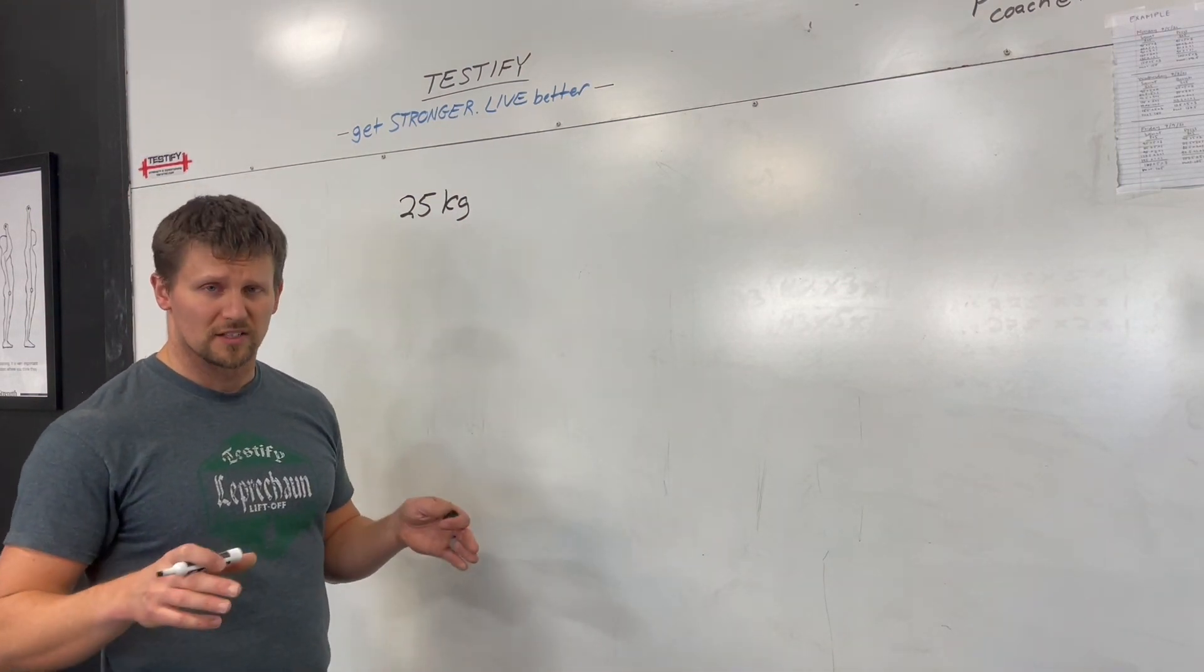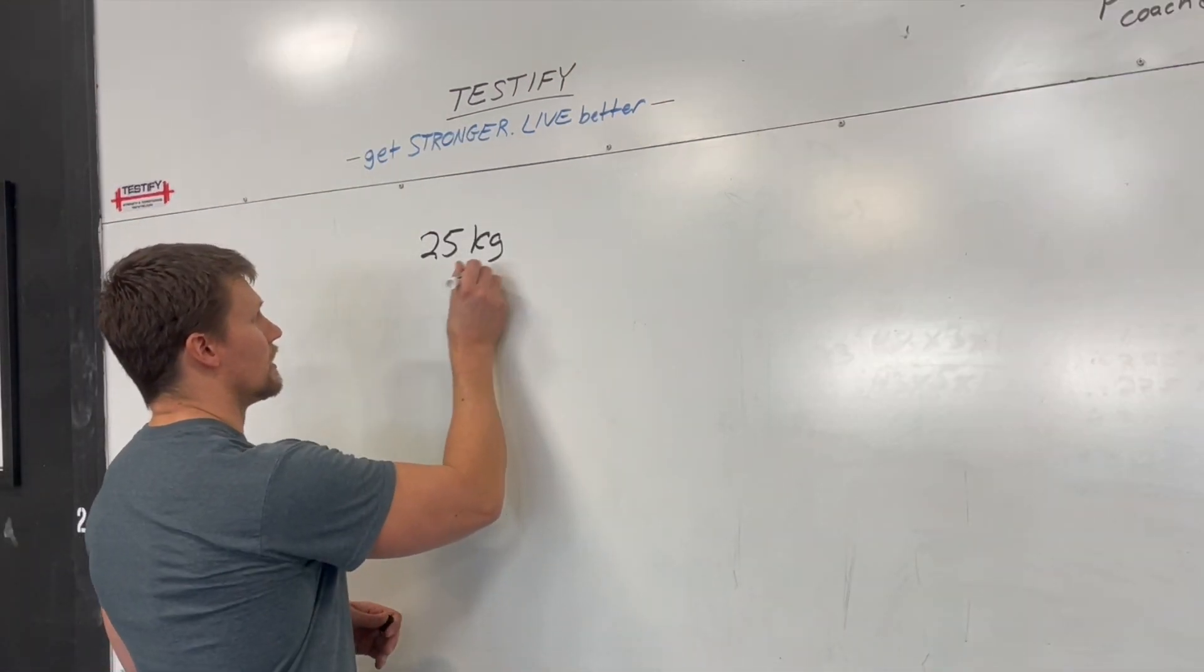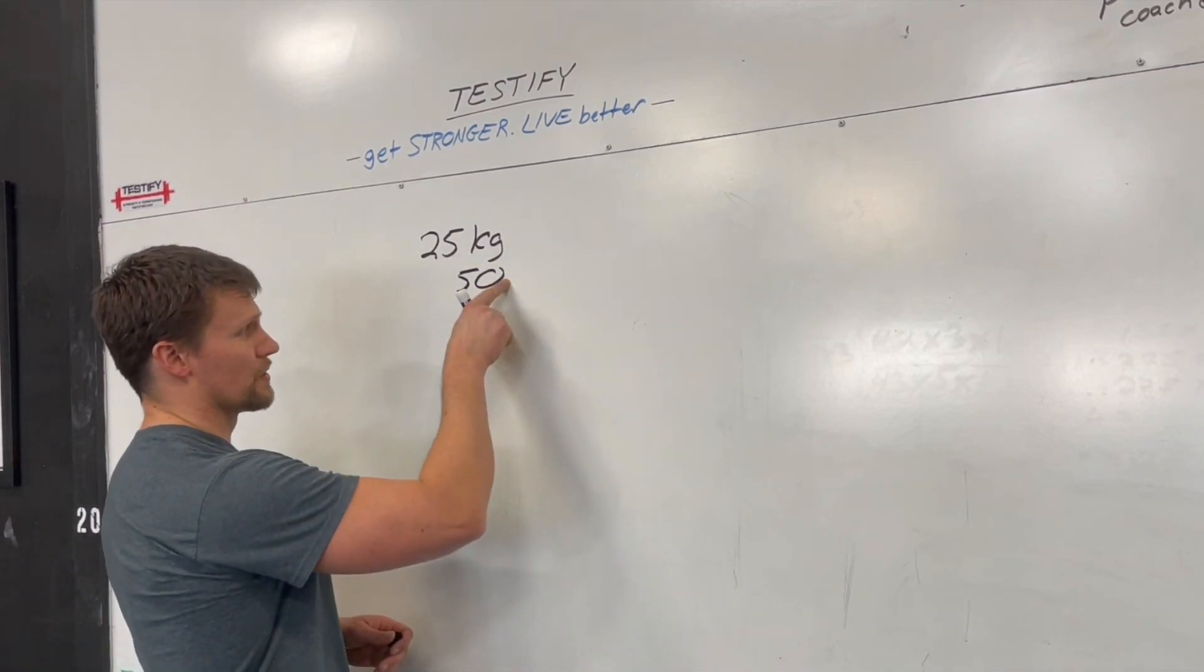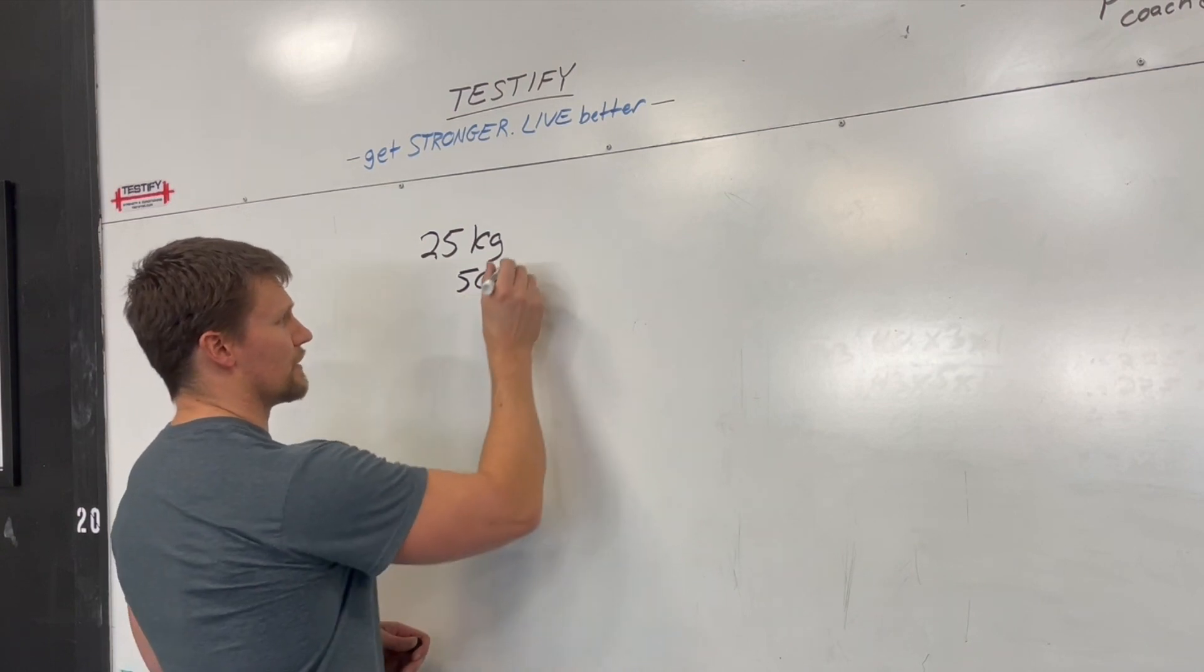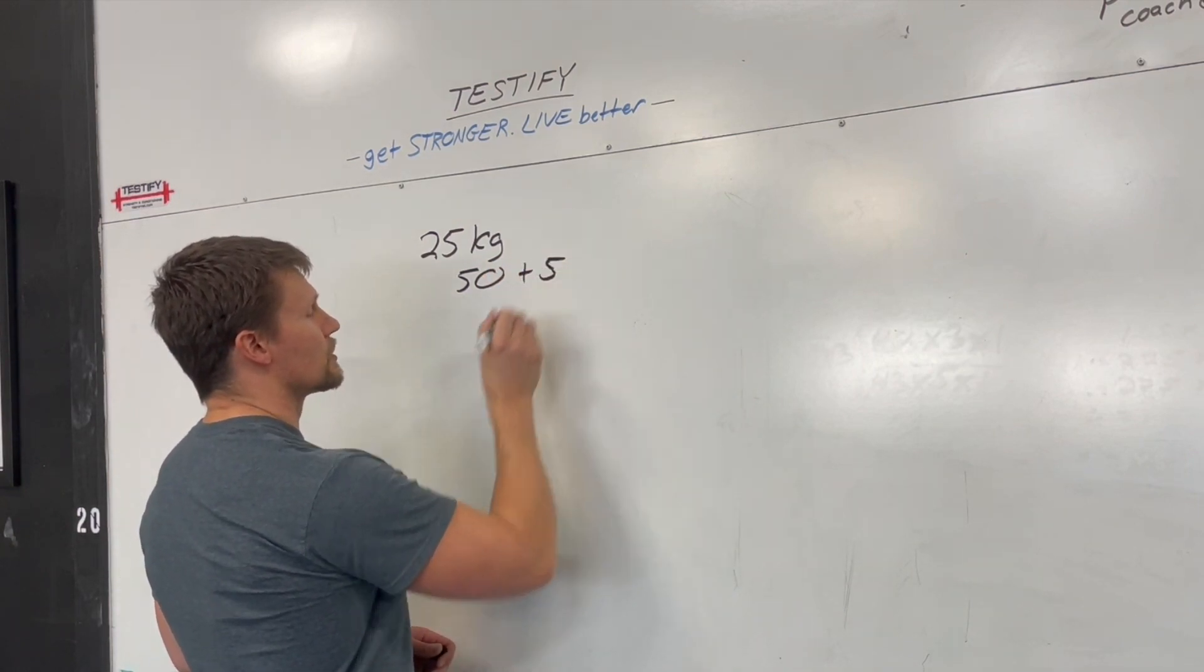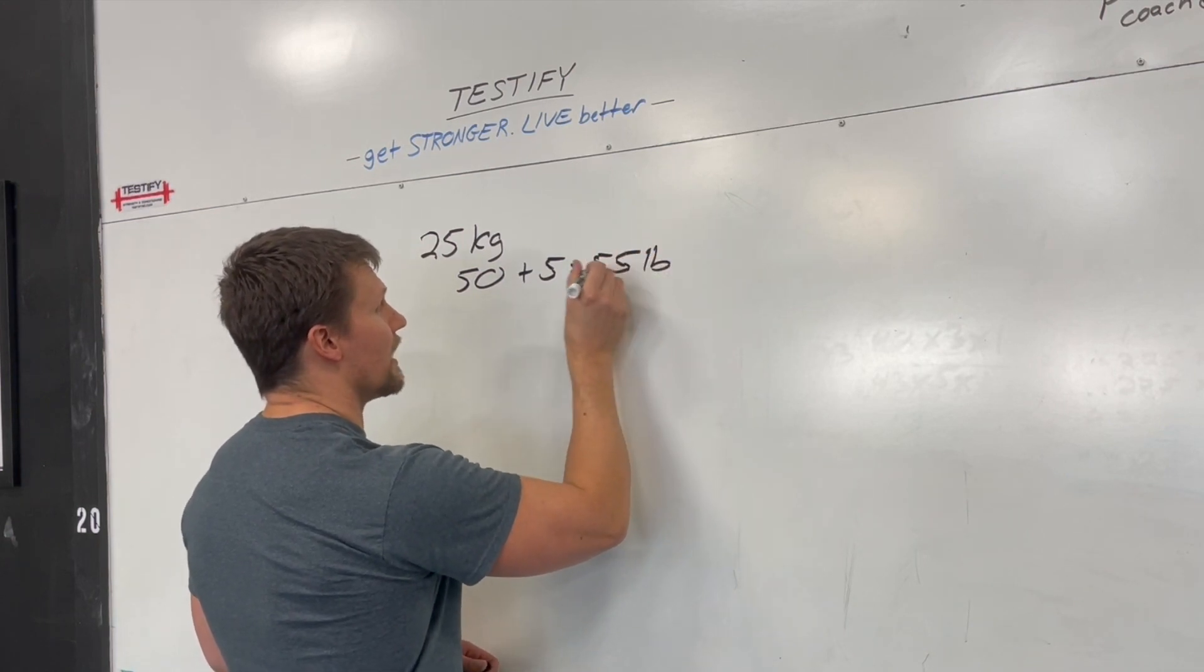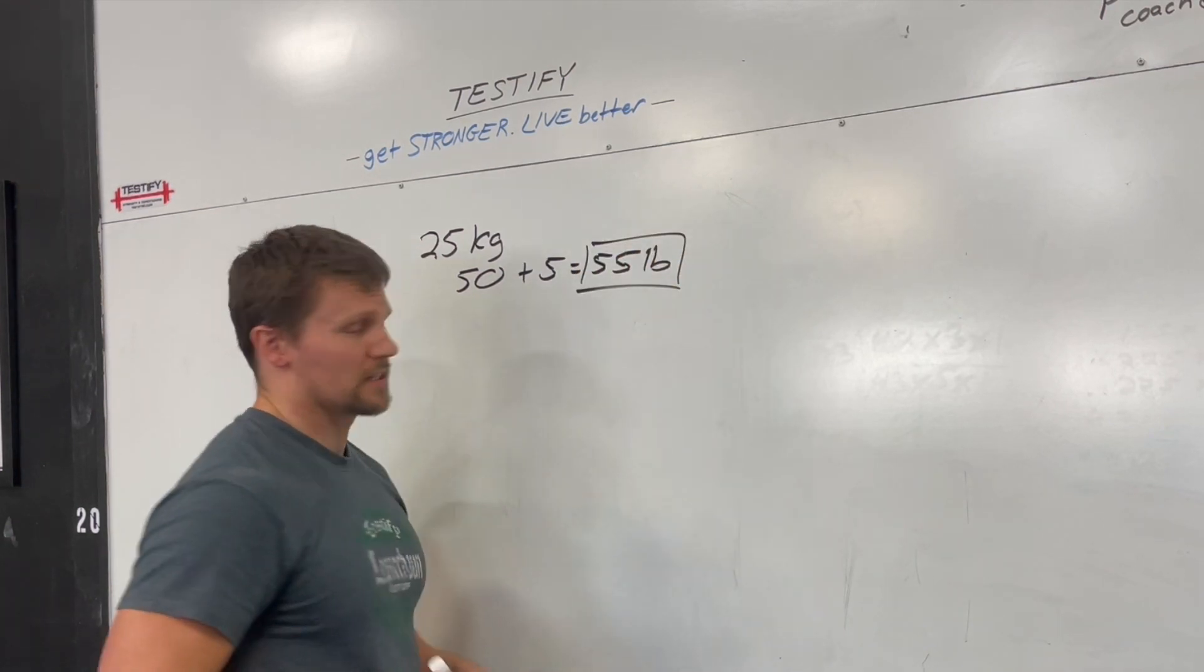So first thing we're going to do is double it. So we get the number 50. Next we're going to find 10% of that number 50. So pretend there's a decimal, move the decimal over, you get the number 5. So if you take 50 plus 5, not too terribly complicated, you get 55 pounds.